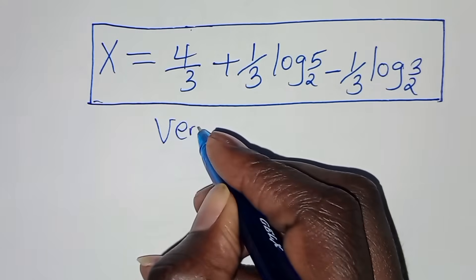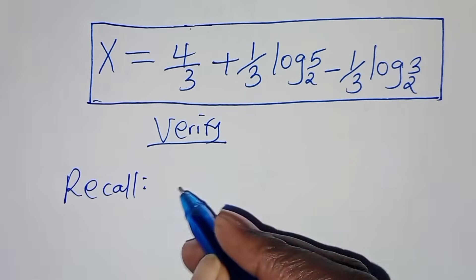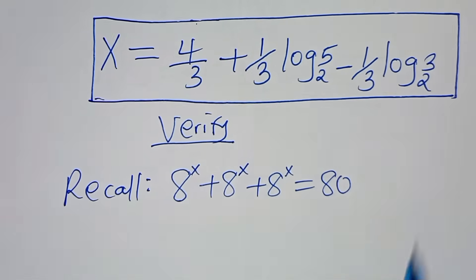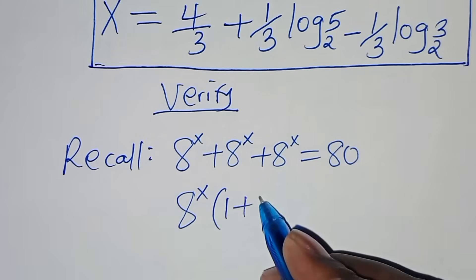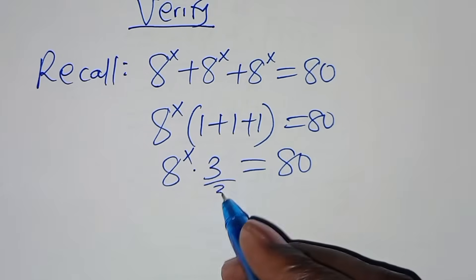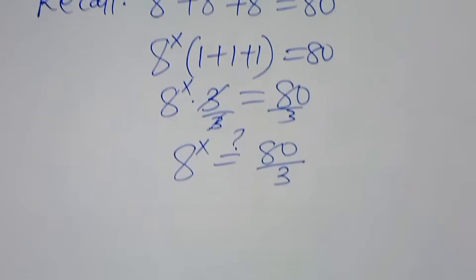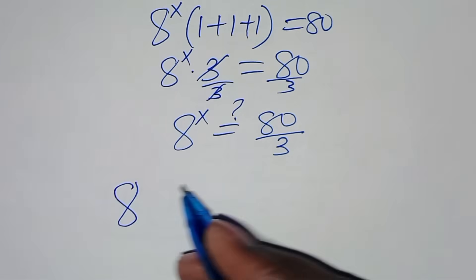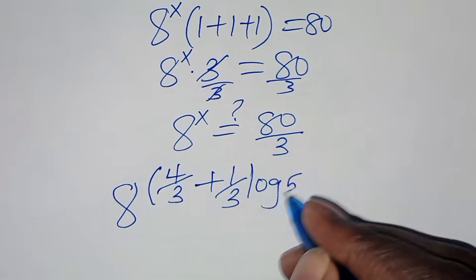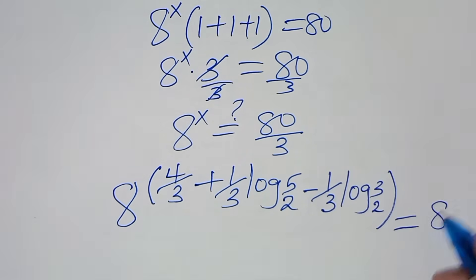Let's verify that this value of x actually satisfies the equation. Recall that 8^x plus 8^x plus 8^x should give us 80. Substituting the value of x — which is 4/3 plus (1/3)·log₂(5) subtract (1/3)·log₂(3) — we have 8 raised to that power, and this should give us a value of 80 divided by 3.